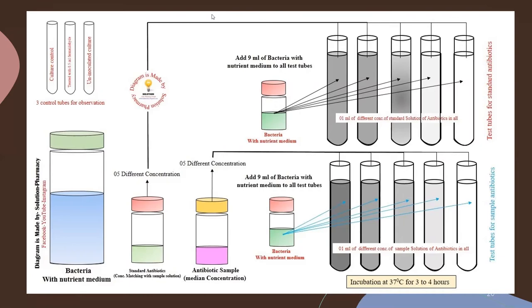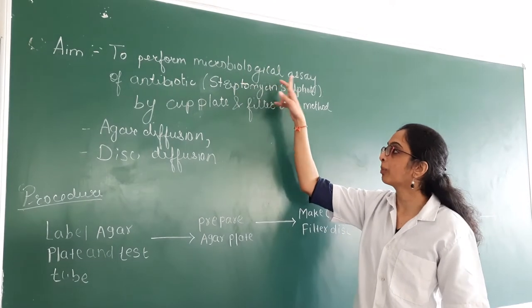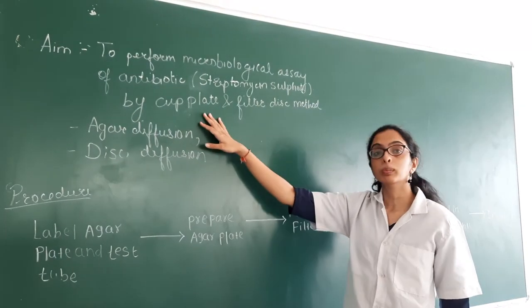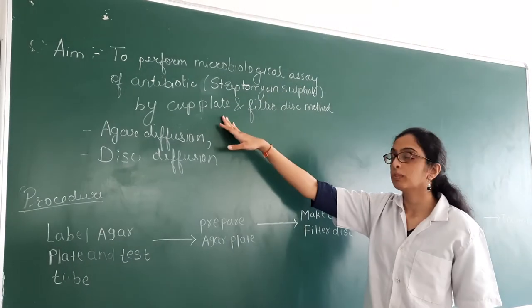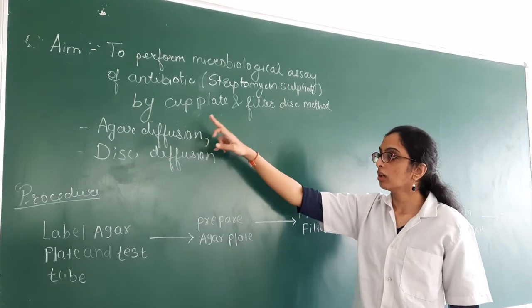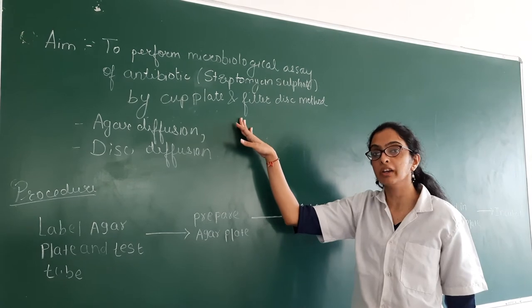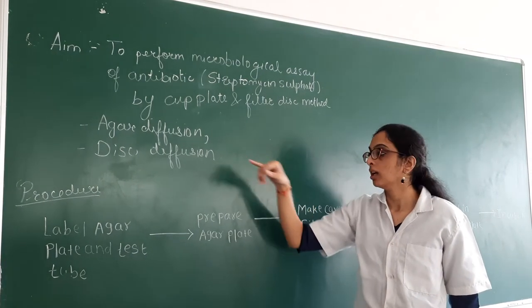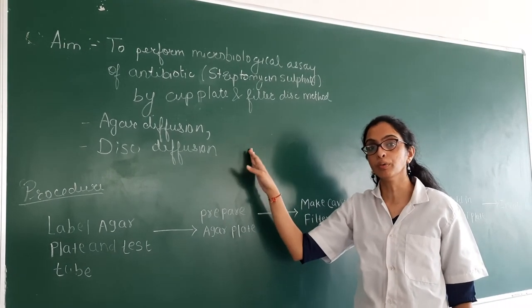Now we will see the procedure for performing the microbiological assay of streptomycin by cup plate and filter disc method. The cup plate method is also known as agar diffusion method because the antibiotic solution diffuses into the agar. The filter disc method is also known as disc diffusion because the antibiotic disc diffuses its solution into the agar, and due to the diffusion it shows the zone of inhibition.